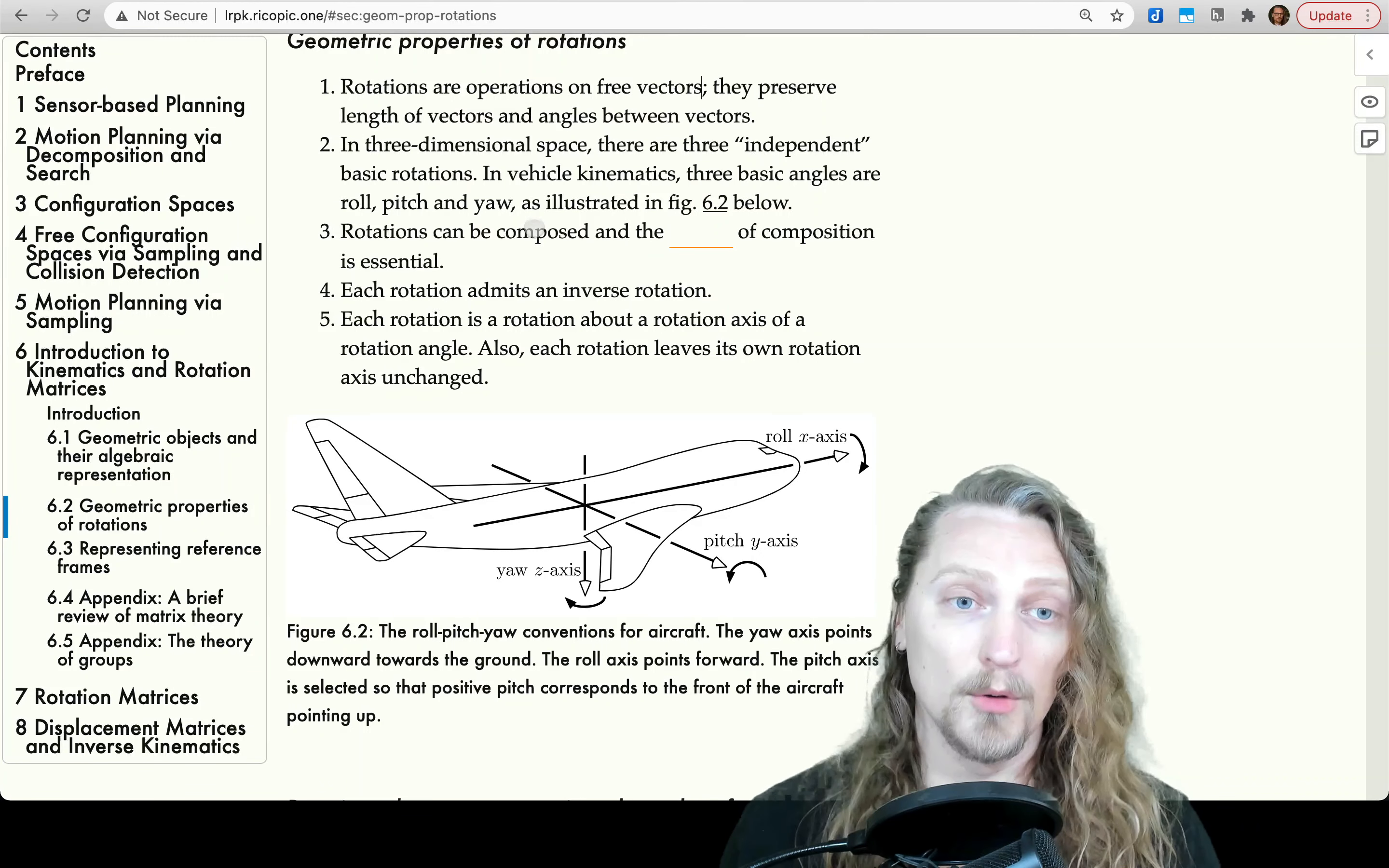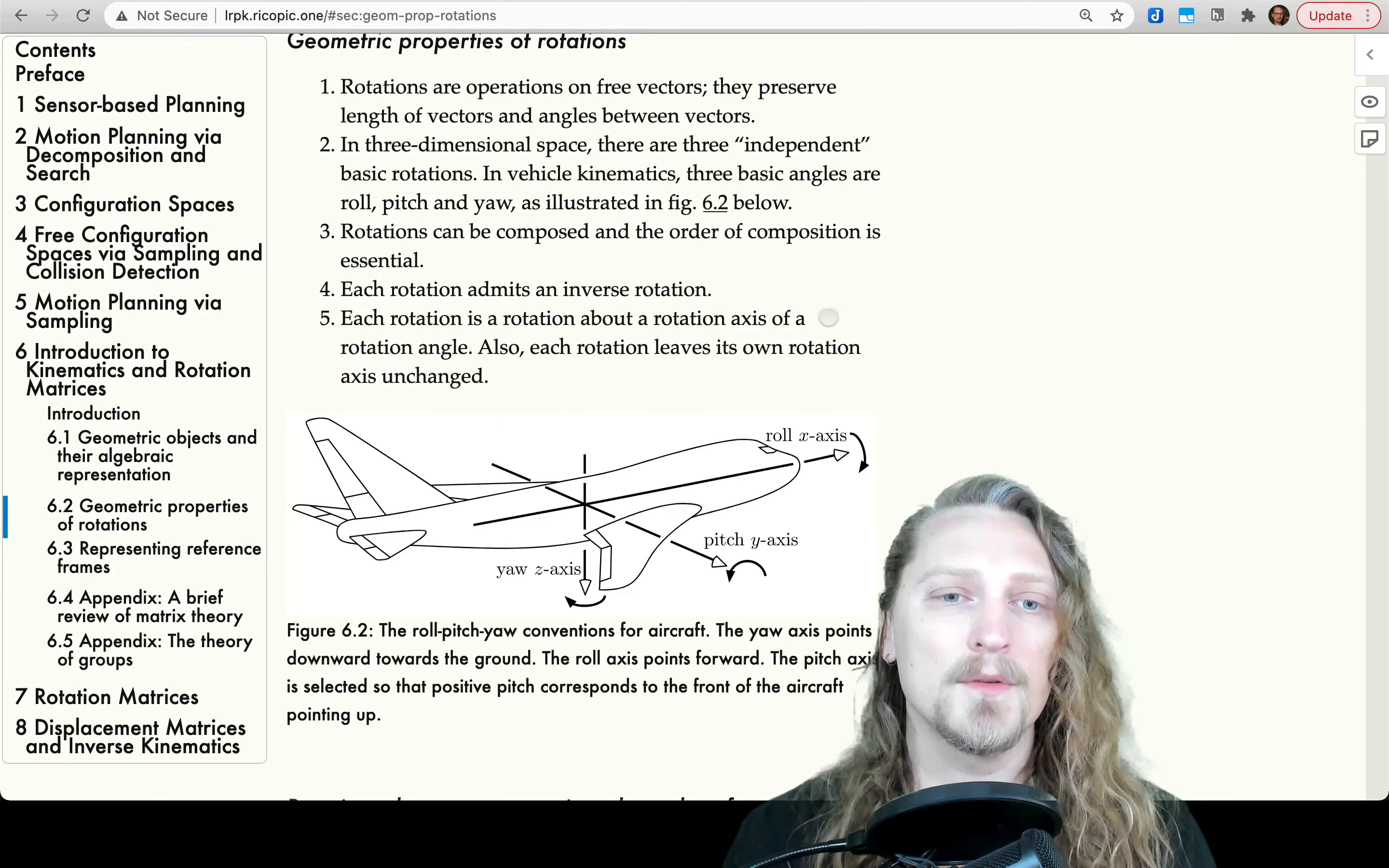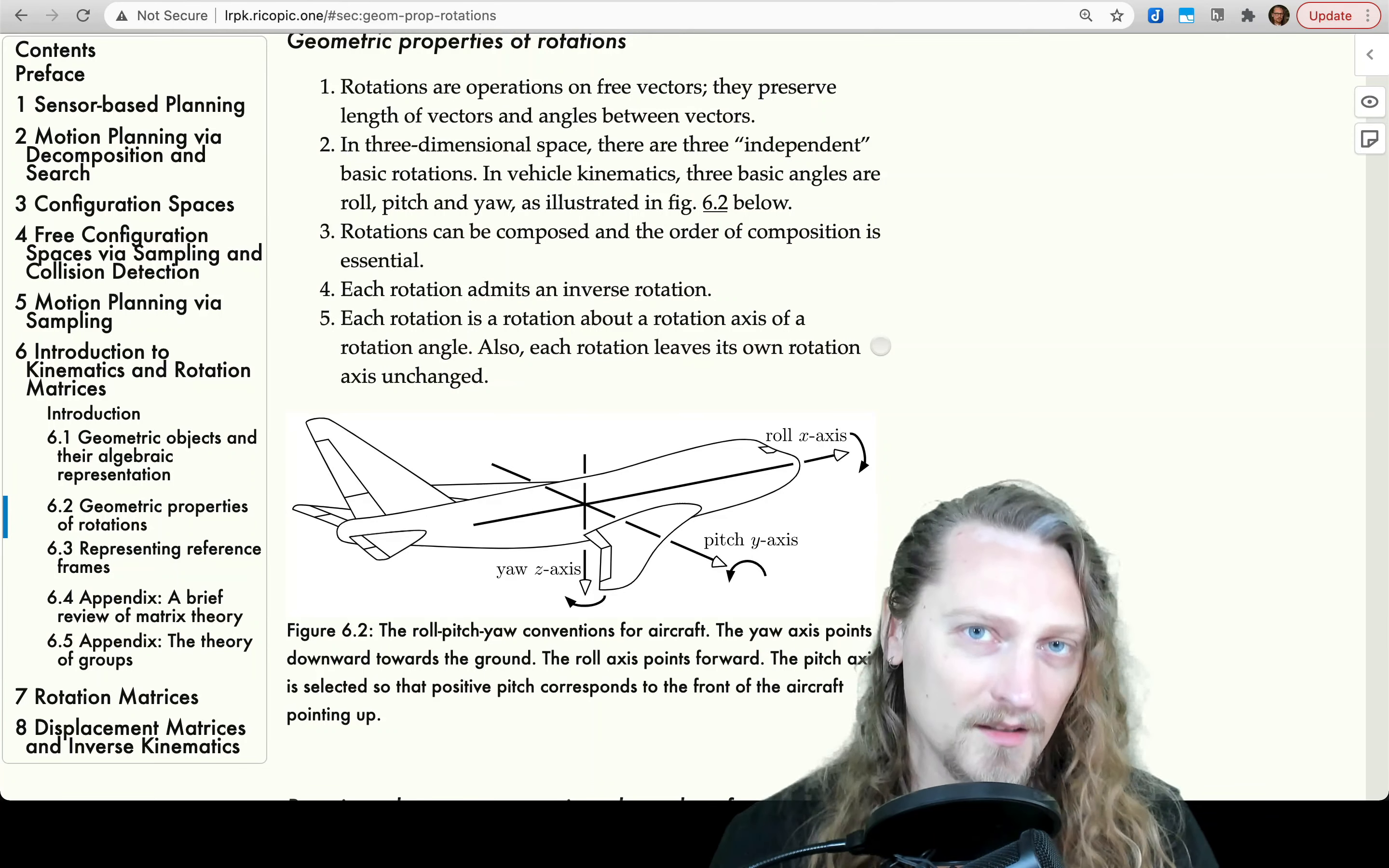Three. Rotations can be composed, and the order of composition is essential. Four. Each rotation admits an inverse rotation. Five. Each rotation is a rotation about a rotation axis of a rotation angle. Also, each rotation leaves its own rotation axis unchanged. As you rotate about the axis, the direction that the axis is pointing doesn't change.